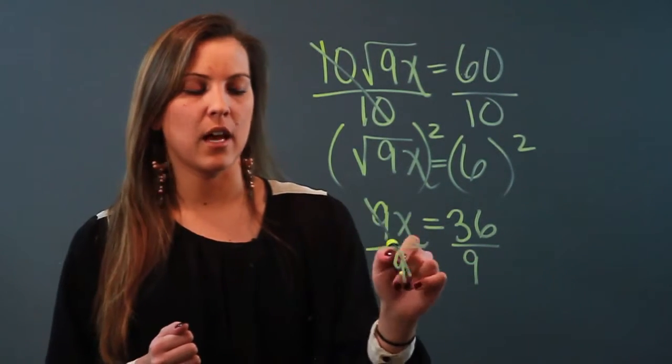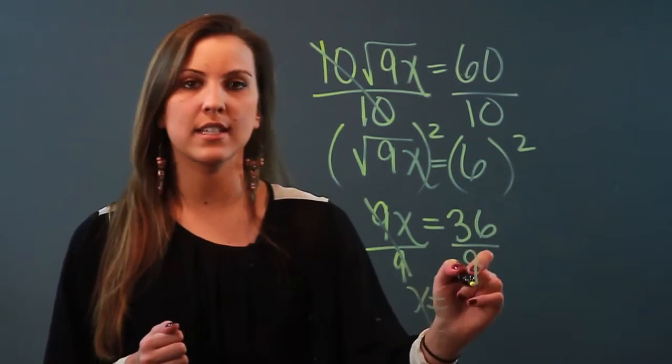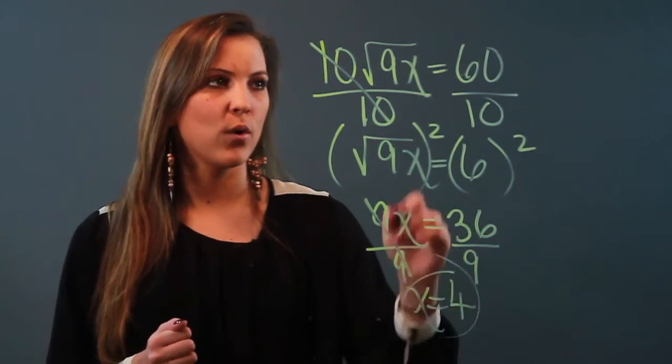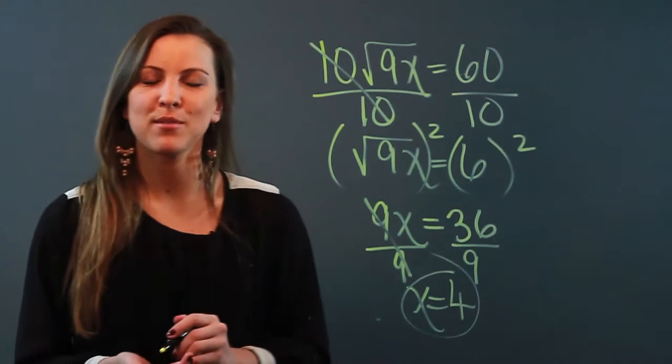9 and 9 cancel out because that equals 1. So I have x equals 36 divided by 9 is 4. And that's how you solve an equation with square root signs.